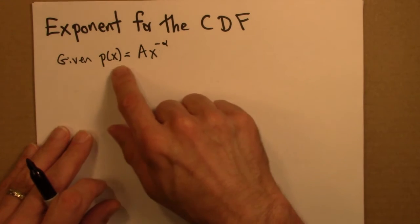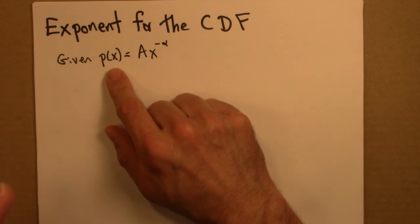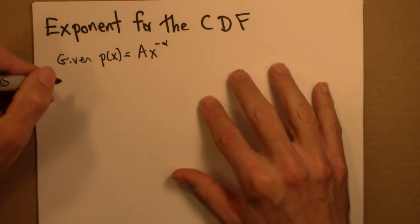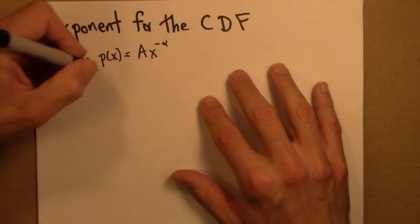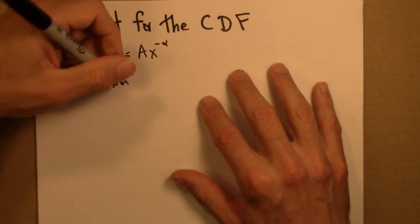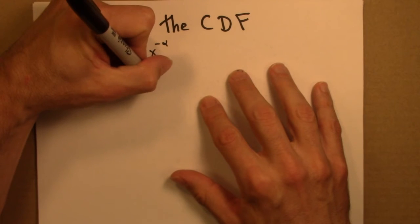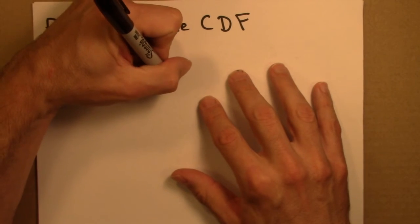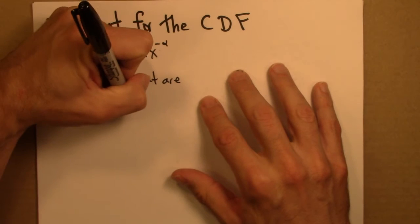We're interested in the cumulative distribution function. That's capital P of x, and that's the fraction of data that are x or greater.